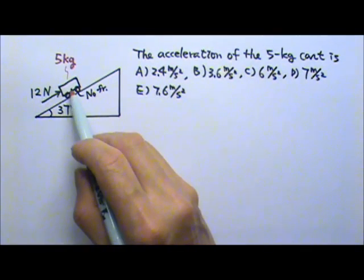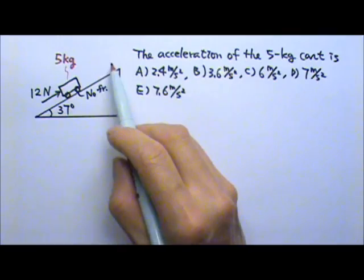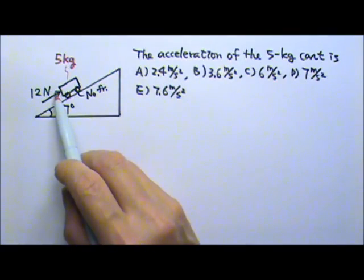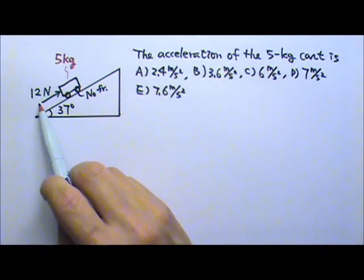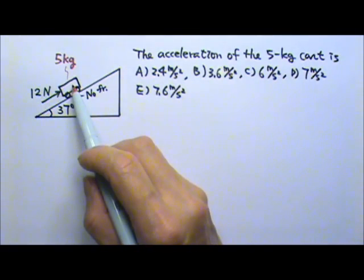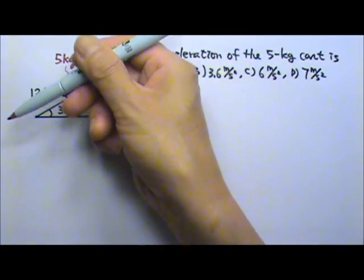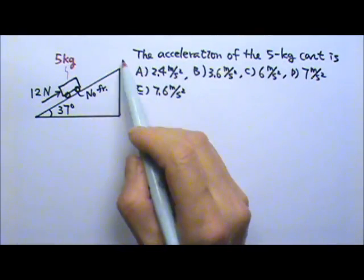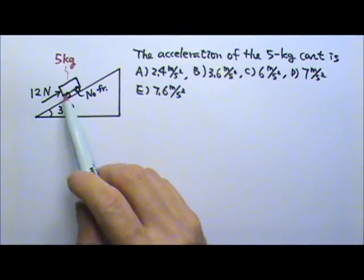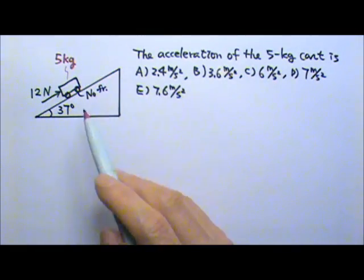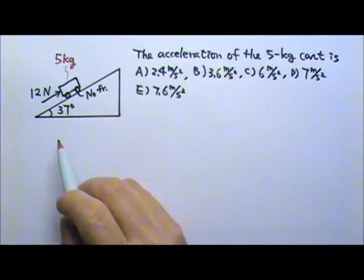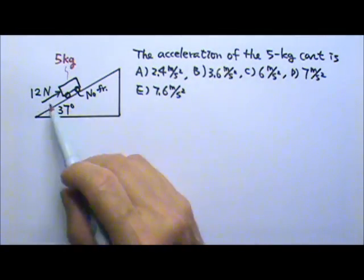Now if the cart has acceleration, it will be along the incline. If we push hard enough, it will accelerate up the incline. If we don't push hard enough, the cart can still be sliding, accelerating down the incline. But no matter what, with this force along the incline, the cart can only be accelerating along the incline, either up or down the incline. So we only need the forces along the incline.